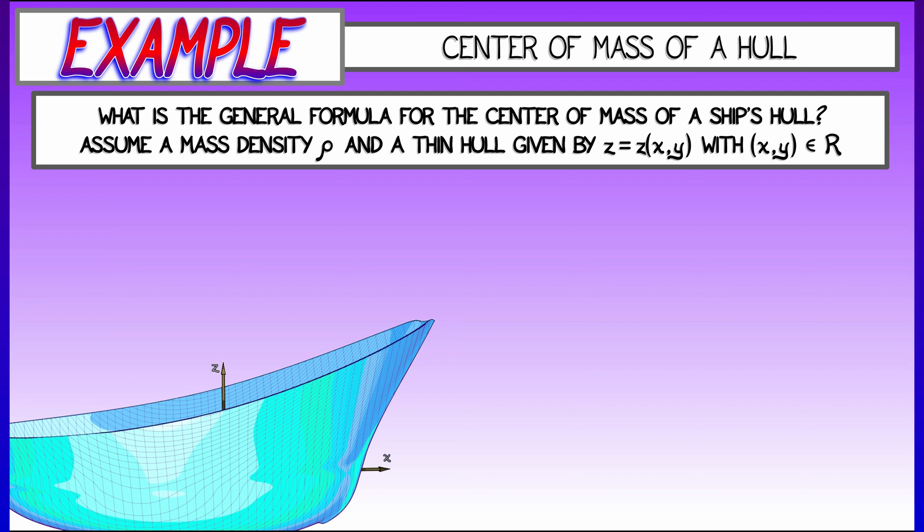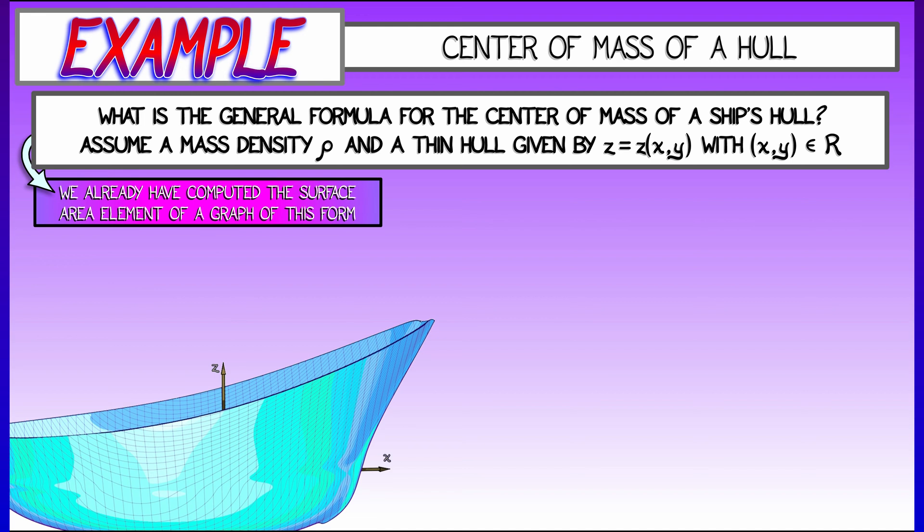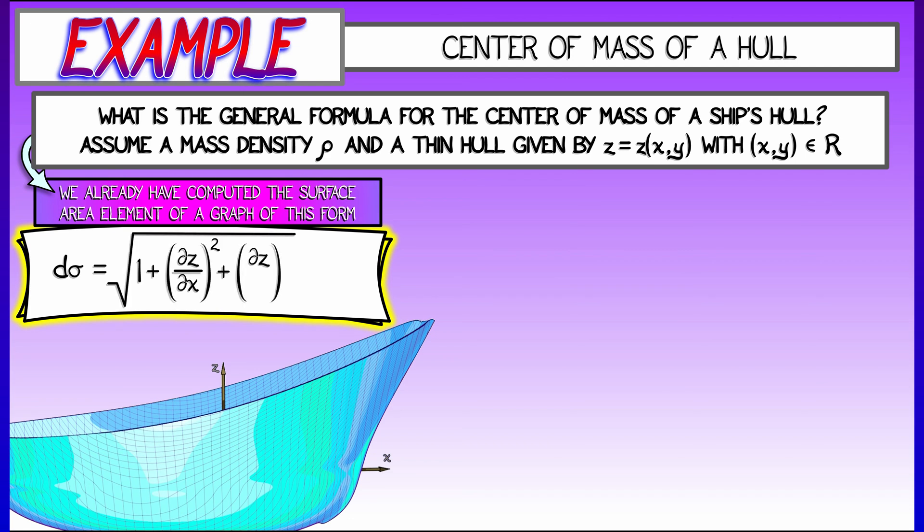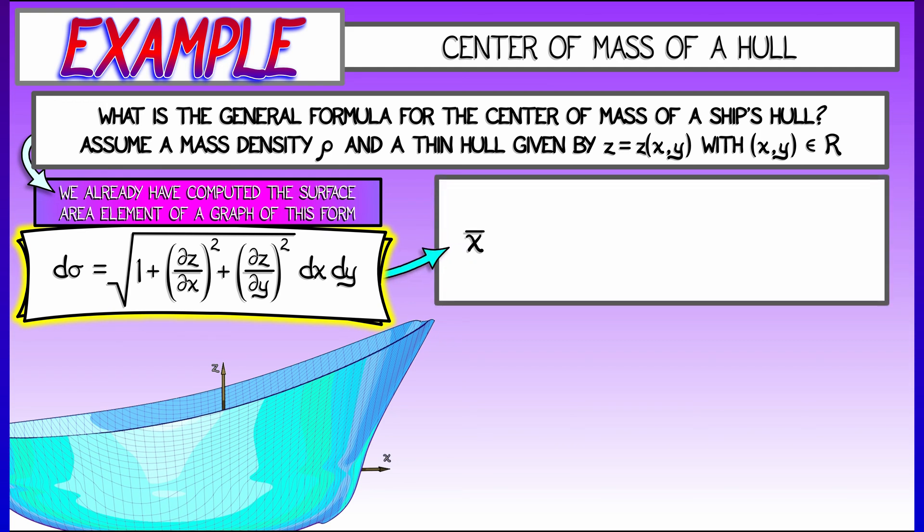Now, this is probably going to be a pretty complicated sort of graph, but we already know what the surface area element for a graph of this form is. Recall we computed that d sigma is the square root of 1 plus partial z partial x squared plus partial z partial y squared times the area element dx dy.